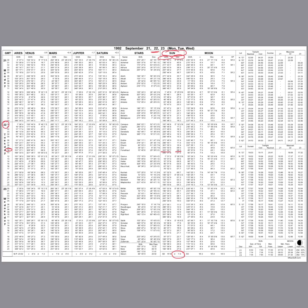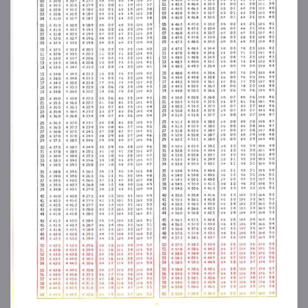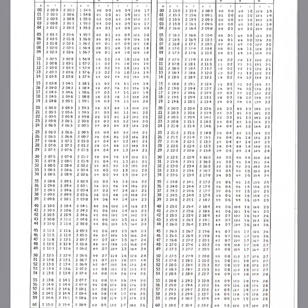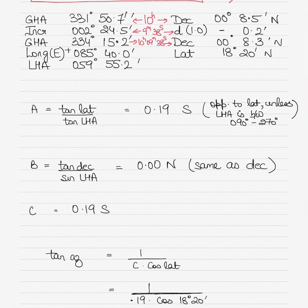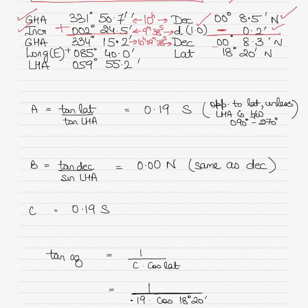For 9 minutes 38 seconds in the almanac's increments table, under the Sun column, the increment is 2 degrees 24.5 minutes. The d-value is 1, giving a d-correction of 0.2, which we subtract because declination was decreasing. Increments are always added to get the corrected GHA. The final declination is 0 degrees 8.3 minutes North.